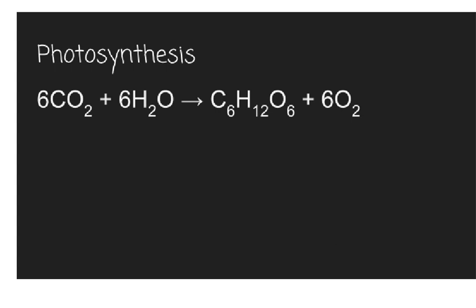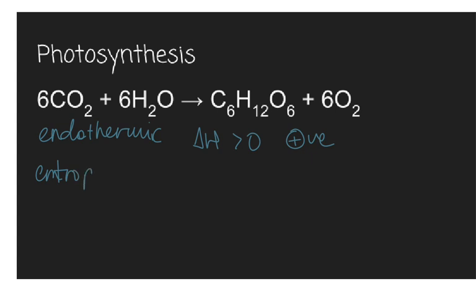Let's take a look at the photosynthesis reaction, where carbon dioxide and water form glucose and oxygen. We know that this is an endothermic reaction, so energy is absorbed by the system in order for reactants to form products. So the delta H is going to be greater than zero — a positive value. Looking at the entropy of the system, the reactants have 12 moles and the products have seven moles, which is a clear indication that the entropy of the system has decreased. So the delta S for this reaction is less than zero — a negative value.